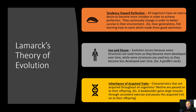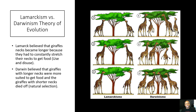Thirdly, Lamarck believed in the inheritance of acquired traits — characteristics acquired throughout an organism's lifetime that were passed onto their offspring. For example, if a bodybuilder gains large muscles through consistent exercise, he would be able to pass this acquired trait onto his offspring, which we all know is not true.